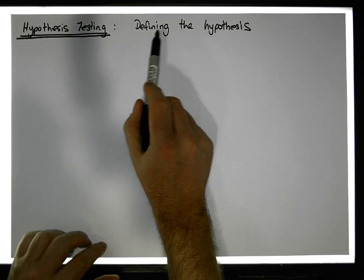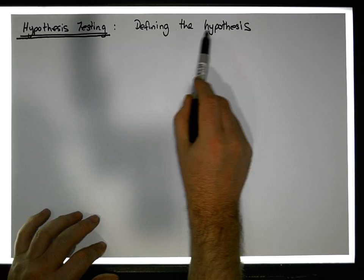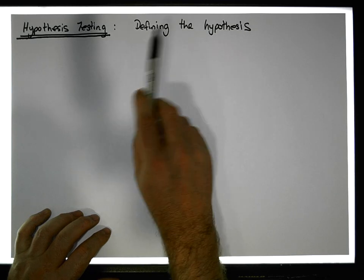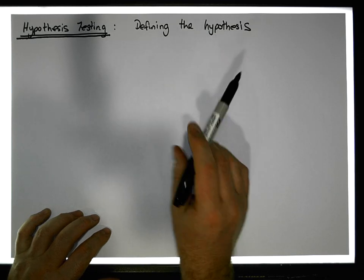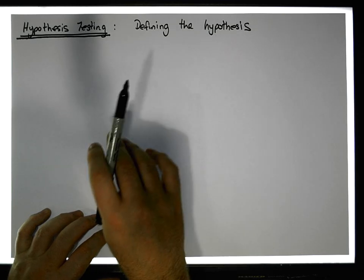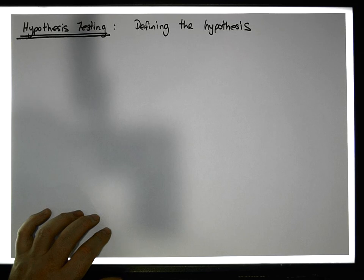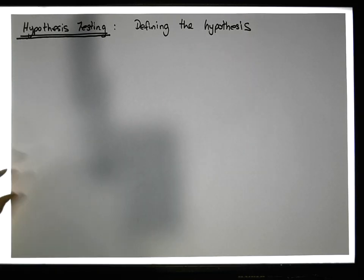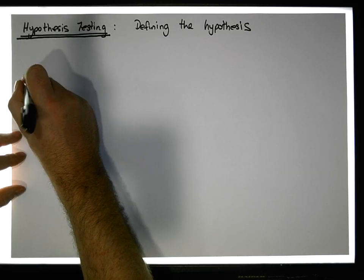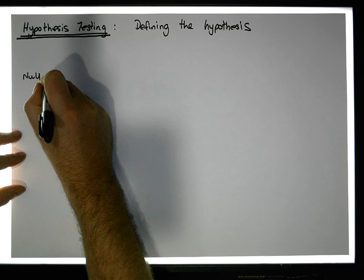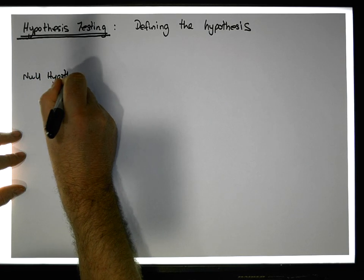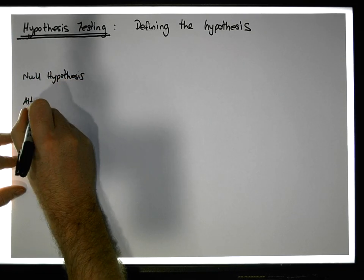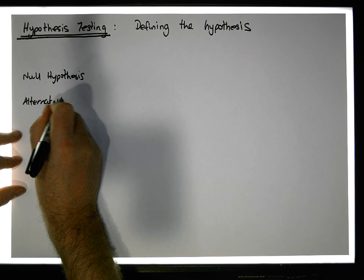Let's assume that we understand the broad concepts of what a hypothesis test is. If not, have a look at one of my earlier videos on the logic behind hypothesis testing. In this case, we're just looking at the null and the alternative positions — the null hypothesis and the alternative hypothesis.